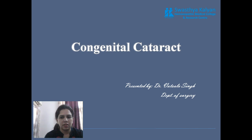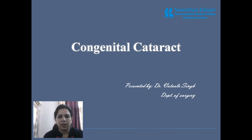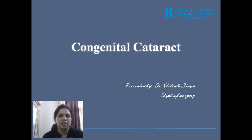Previously we discussed about two types of cataracts: congenital cataracts and acquired cataracts. Today we discuss congenital cataracts. The full term is known as congenital and developmental cataracts. Congenital means which the patient receives by birth, and developmental means in the sequence of development of the lens, if cataract is developed, that is known as developmental cataract.